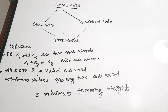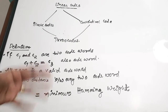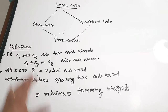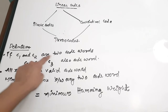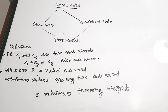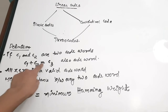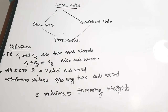In this video we are going to discuss about linear codes or linear code words. These linear codes are used for forward error correction — they are error correcting codes used in information theory and coding. A linear code word has the following features. A code word is said to be a linear code if it satisfies three conditions. If C1 and C2 are two code words of a particular code, then C1 plus C2 equals C3 is also a valid code word.